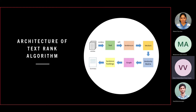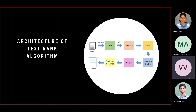TextRank is a general-purpose graph-based ranking algorithm for NLP. Graph-based ranking algorithms are a way for deciding the importance of a vertex within a graph, based on global information recursively drawn from the entire graph. This algorithm is fully unsupervised and no training is necessary.